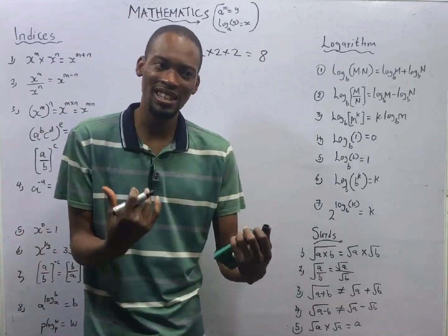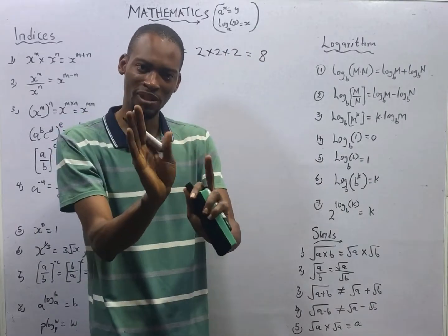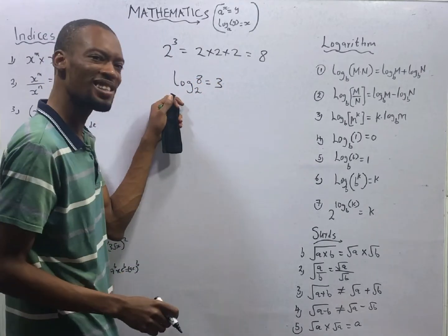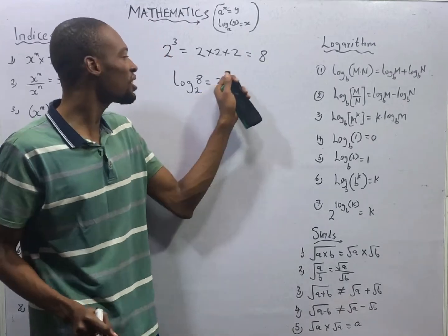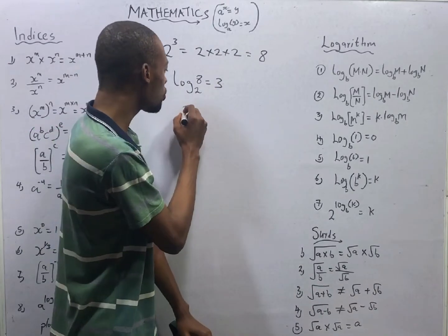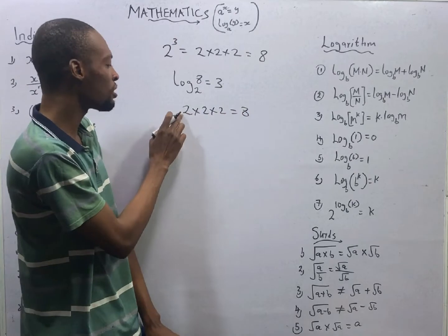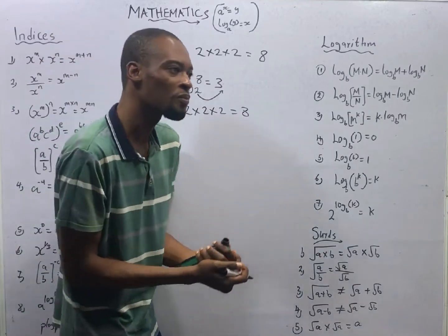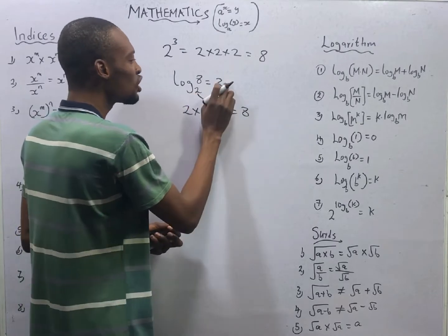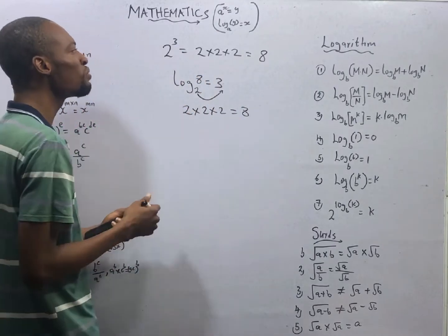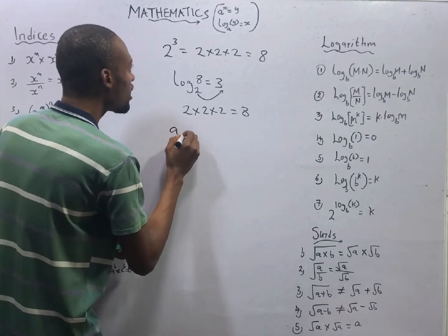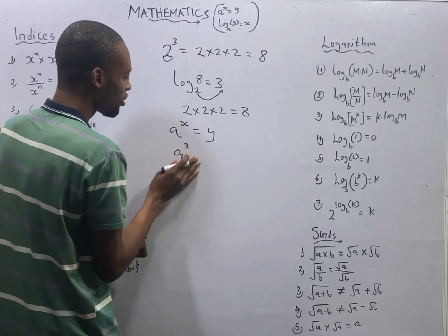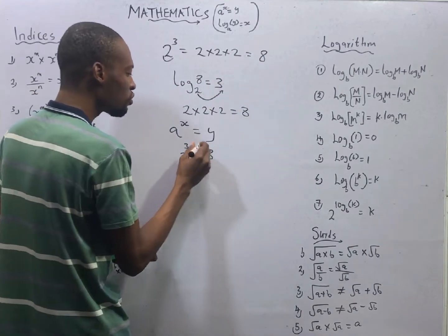Logarithm simply means how many times one number is multiplied to get another. For example, log 8 to base 2 equals 3. This means you need to multiply 2 three times to get 8: 2 × 2 × 2 = 8. The relationship between indices and logarithm is: in indices, if a raised to the power of s equals y — for example, 2 raised to the power of 3 equals 8 — then in logarithm form, log of y to base a equals s, i.e., log 8 to base 2 equals 3.